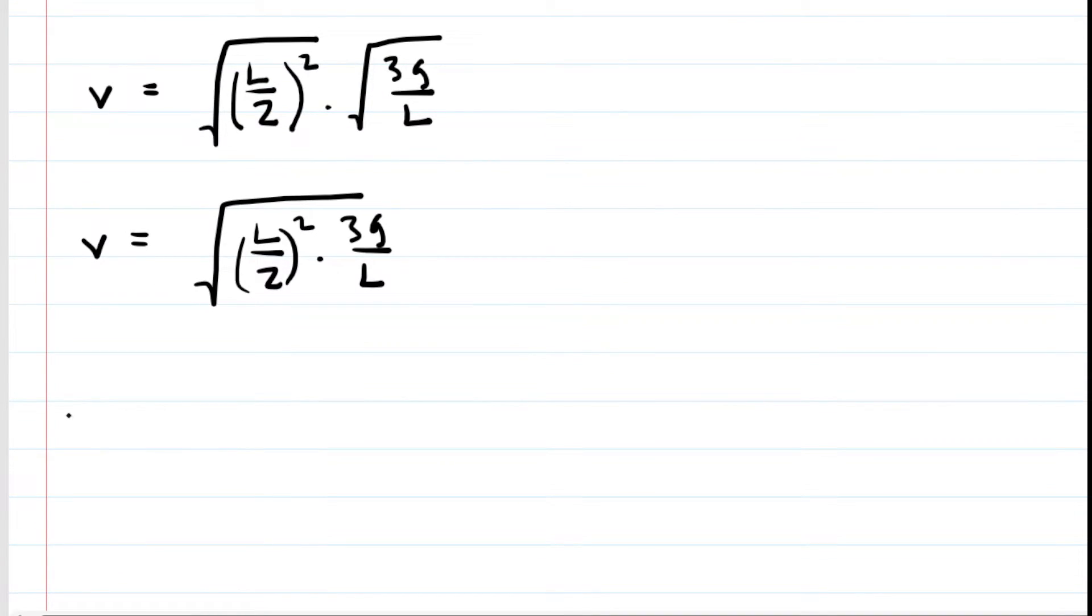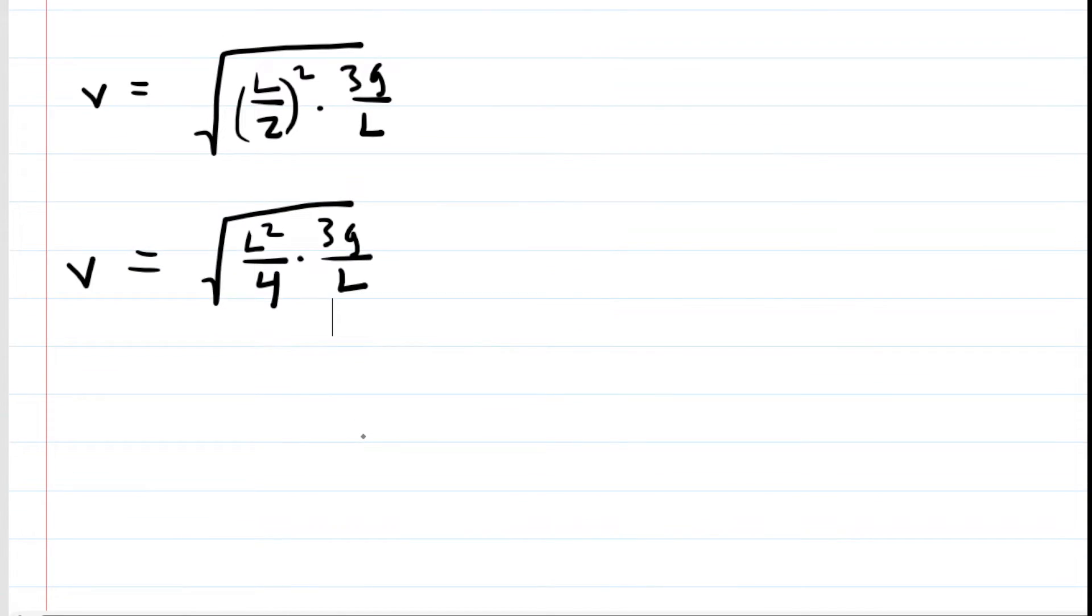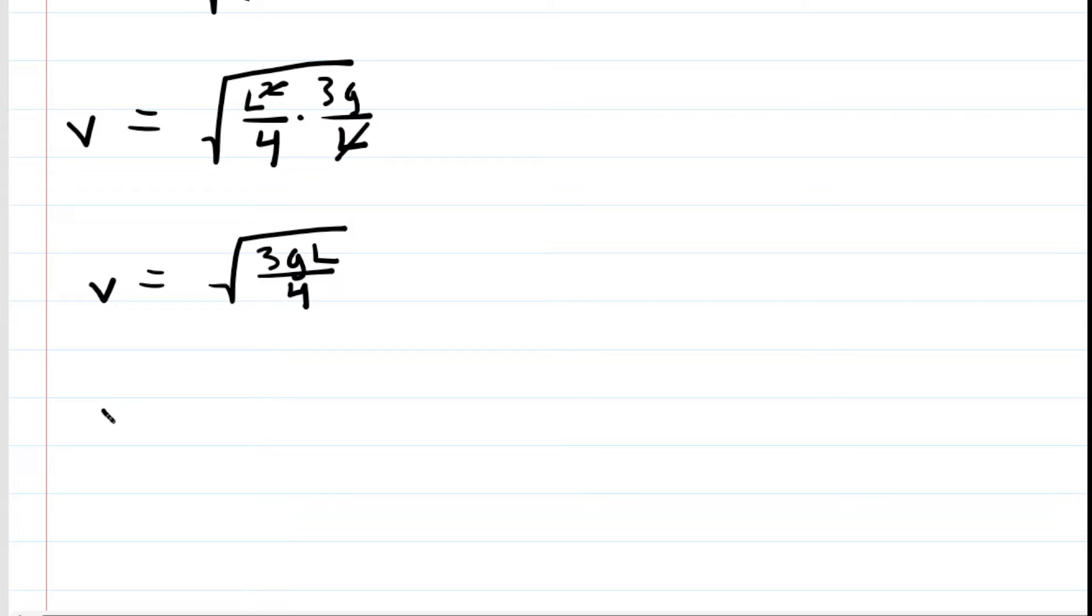Now we can square that L divided by 2 to give us an L squared over 4. We can then cancel a factor of L. So now we have the following. And that 2 would be acceptable. We'll do just a little more touch-up. We'll take the square root of the numerator and denominator separately.